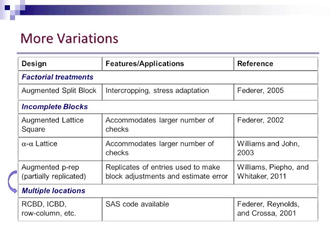Other possibilities would include an augmented split block. For example, if you wanted to test not only new entries but also look at adaptation to different stresses — say, a well-watered and a drought-stressed treatment — you could combine those in factorial combinations of treatments, and they could be analyzed with the augmented split block.